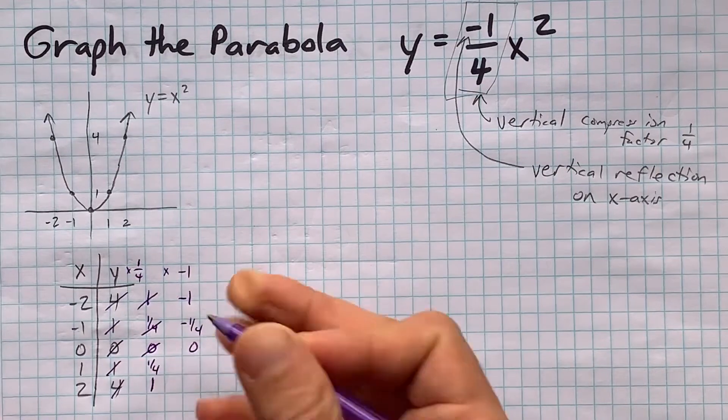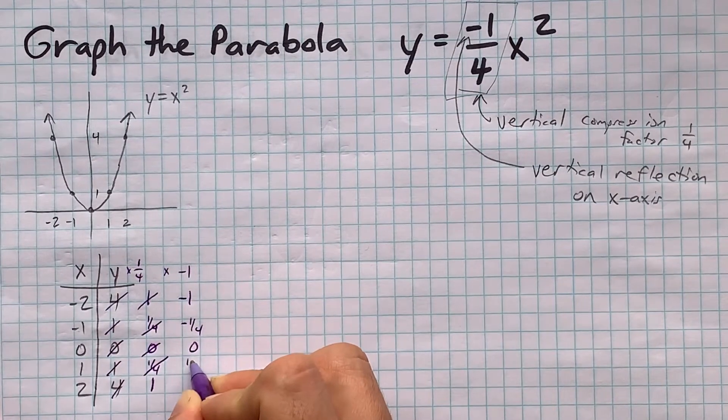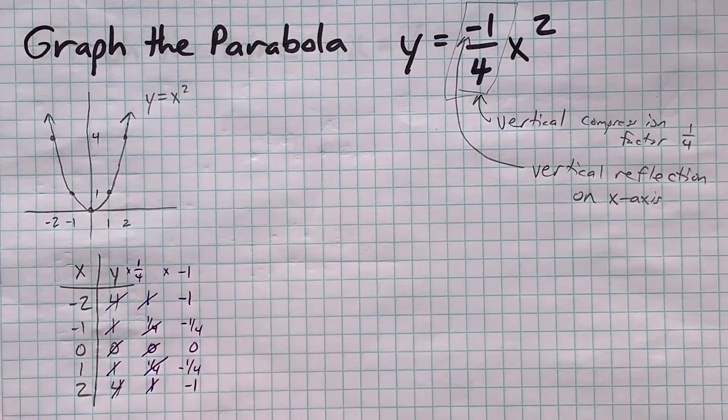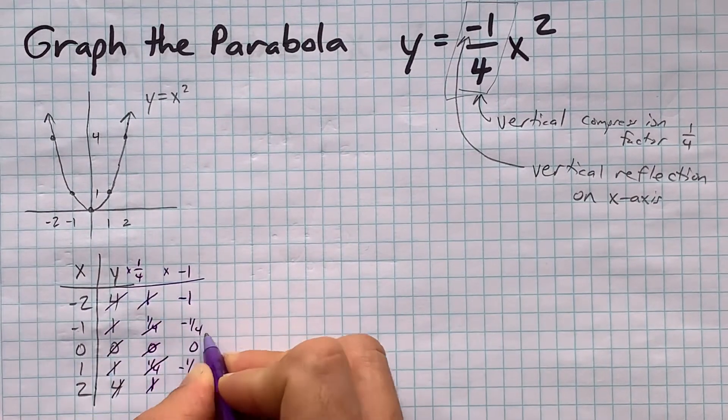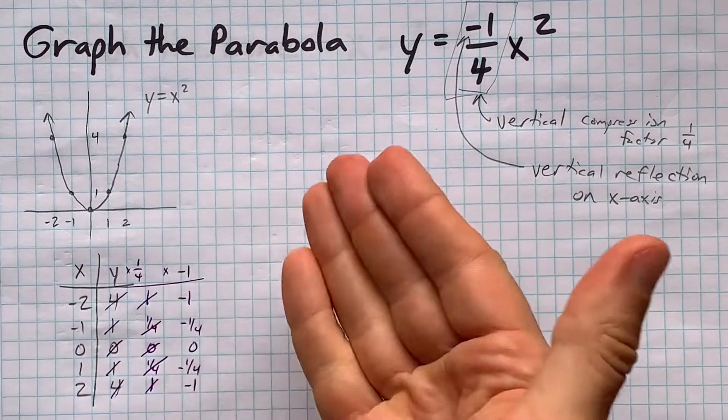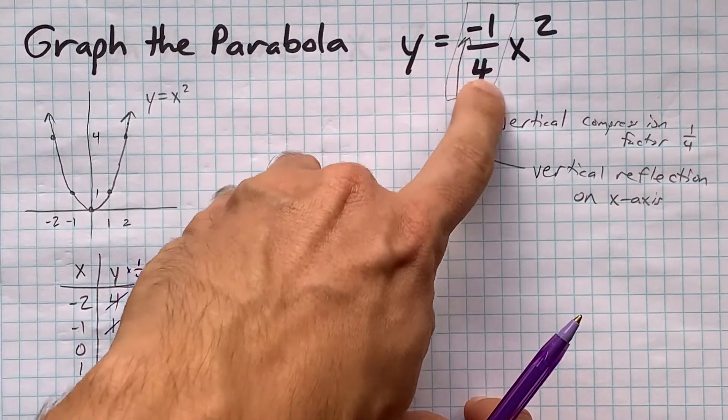Flipping the sign on 0 doesn't actually affect it. A quarter becomes negative a quarter, and 1 becomes negative 1. So, these here, negative 2 comma negative 1, negative 1 comma negative one-quarter, etc., are the points on the final graph, or the graph of y equals negative one-quarter x squared.